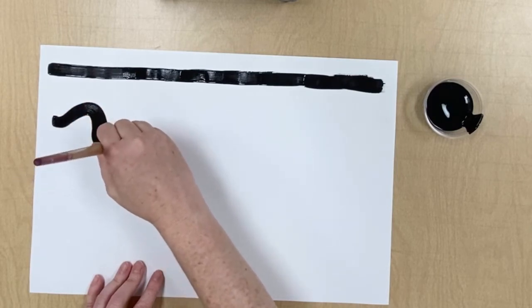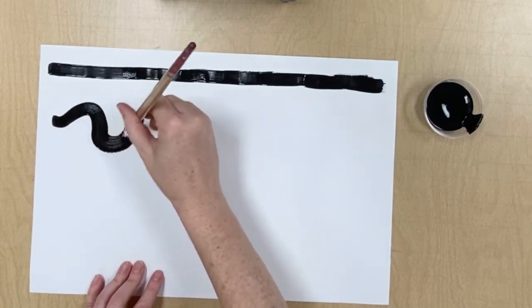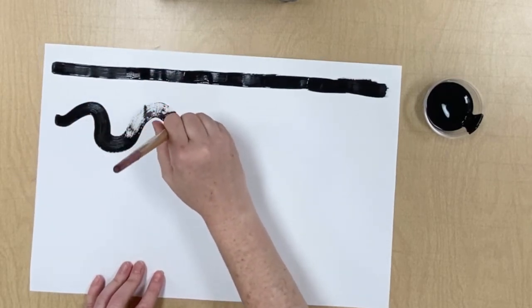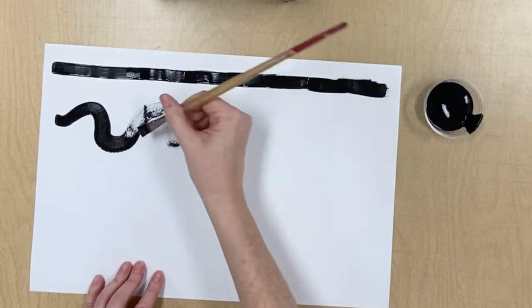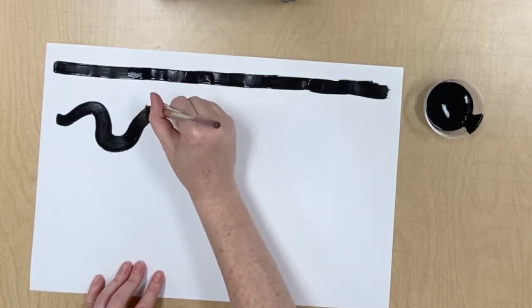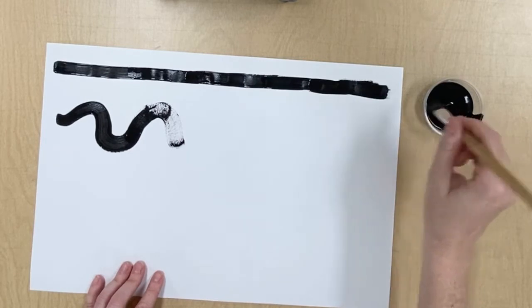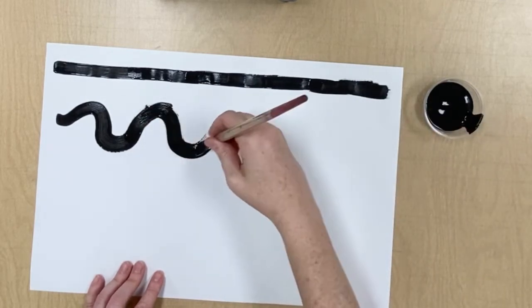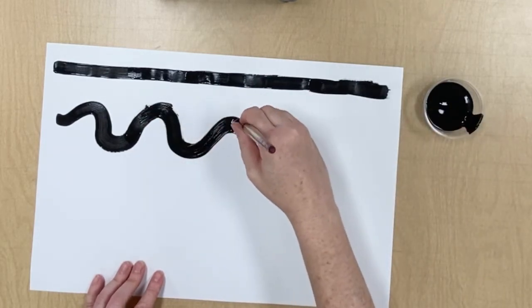After my straight line then I'm going to do a wiggly line. That paint keeps running out. So I keep dipping in because I like my lines to be solid black.